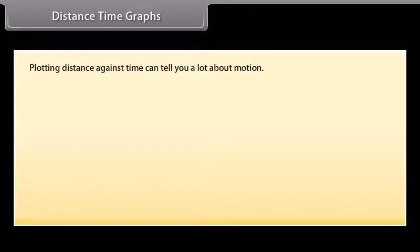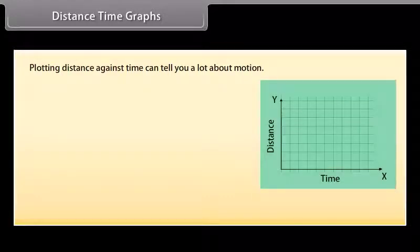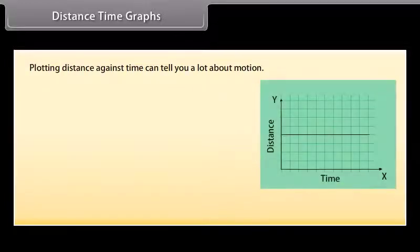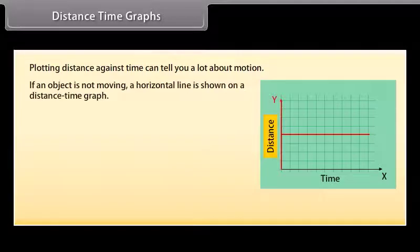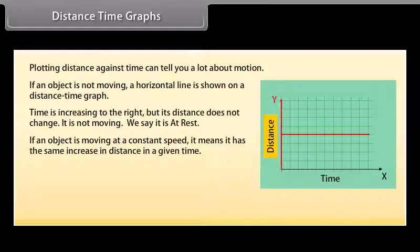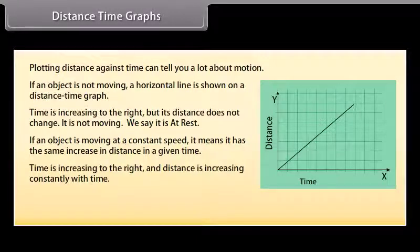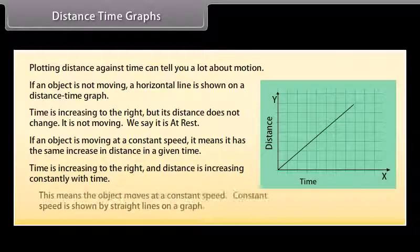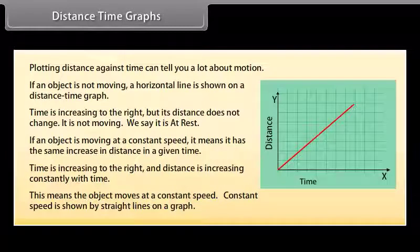Distance-time graphs. Plotting distance against time can tell you a lot about motion. Time is always plotted on the x-axis; the further to the right on the axis, the longer the time from the start. Distance is plotted on the y-axis; the higher the graph, the further from the start. If an object is not moving, a horizontal line is shown on a distance-time graph — the distance does not change, so it is at rest. If an object is moving at a constant speed, distance increases constantly with time, shown by a straight line on the graph.